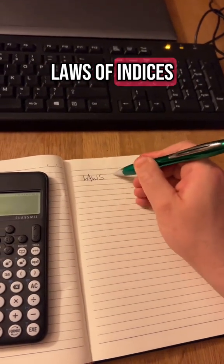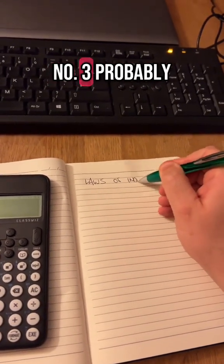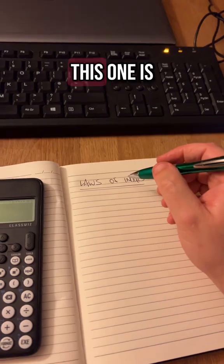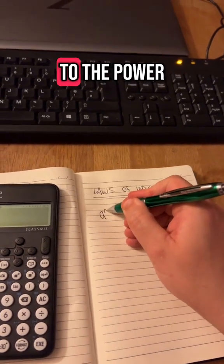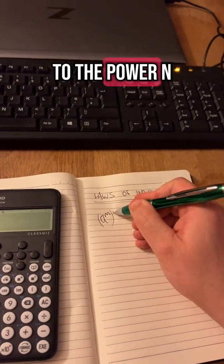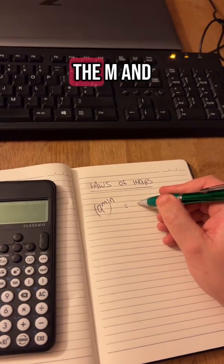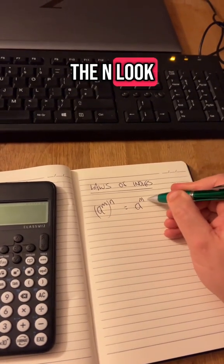Here's another one, laws of indices number three. This one is we'll do e to the power m and then we'll raise that to the power n. To simplify that you just multiply the m and the n.